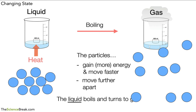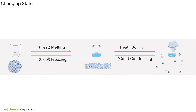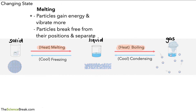We can summarize this on one slide with all the key terms together. We have our solid on the left — for example some ice. We heat it and it starts melting, turning to liquid. Then we heat the liquid and it starts boiling, turning to gas. During melting, the particles gain kinetic energy and vibrate more, then break free from their positions and separate, allowing the solid to become a liquid.